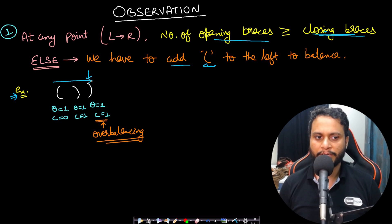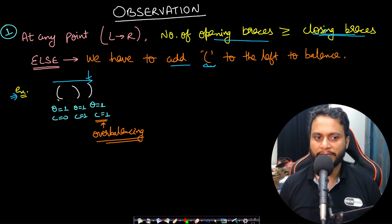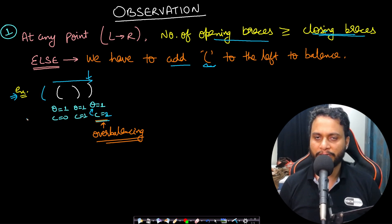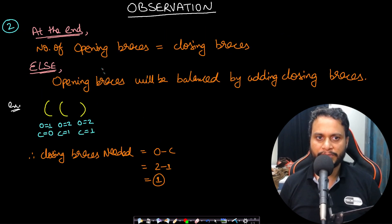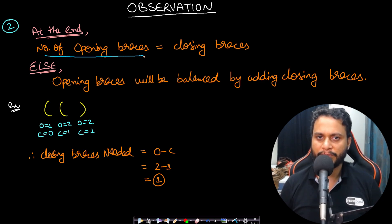If you have seen more closing brackets than opening brackets at any point, you need more opening brackets to the left. For example, at the third position you've seen two closing braces but only one opening bracket, so closing minus opening equals one bracket needed on the left. We call this 'over-balancing'.